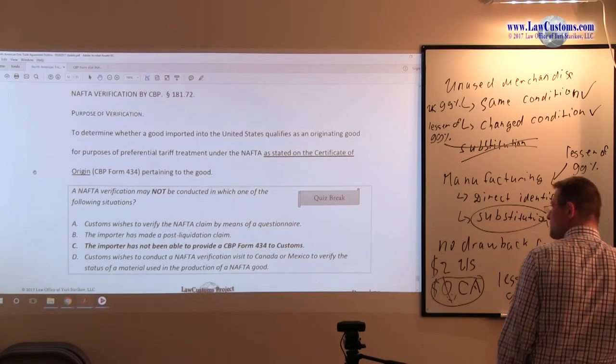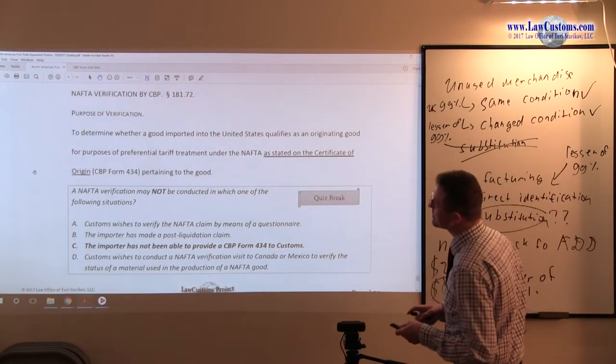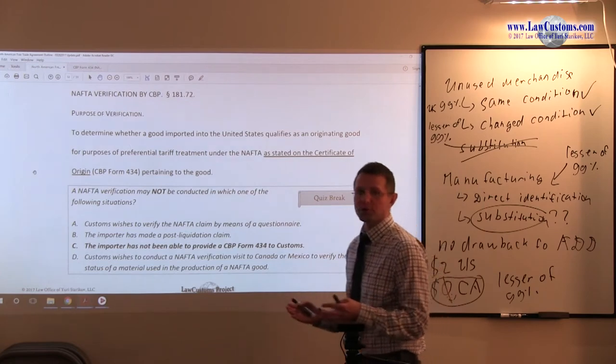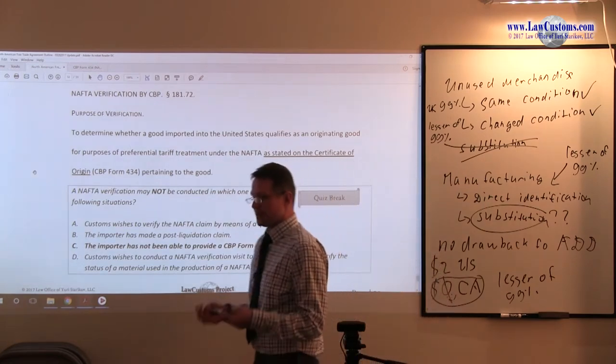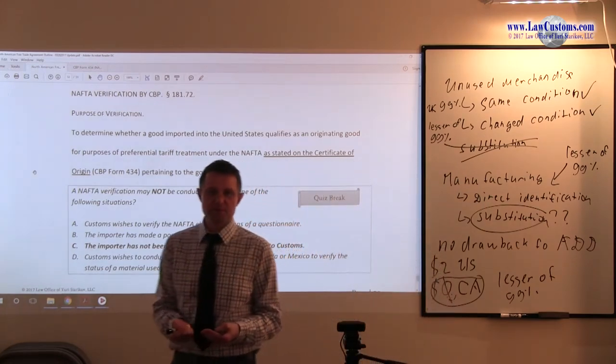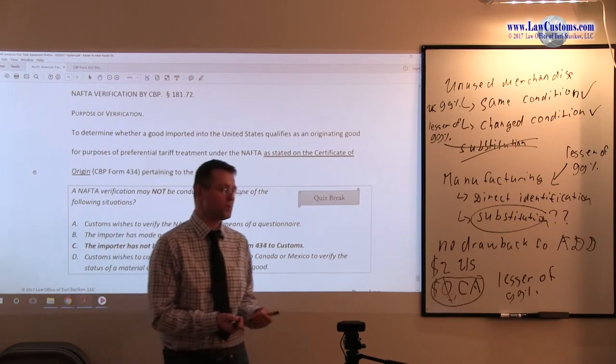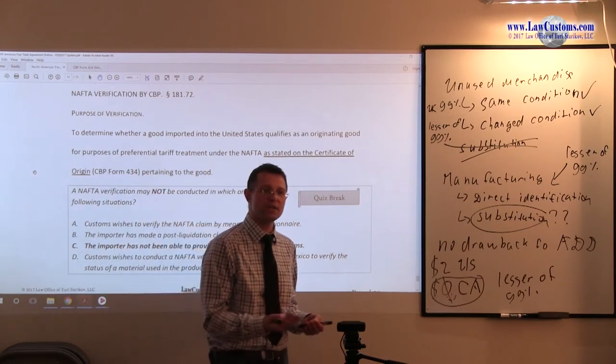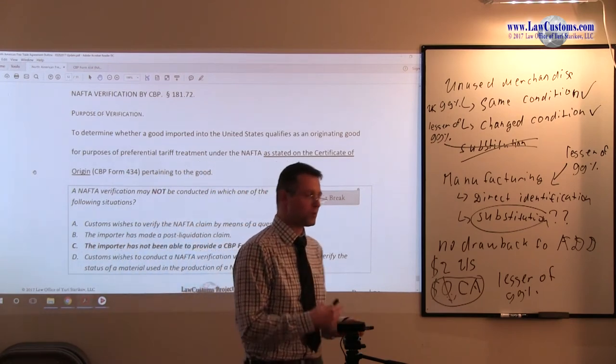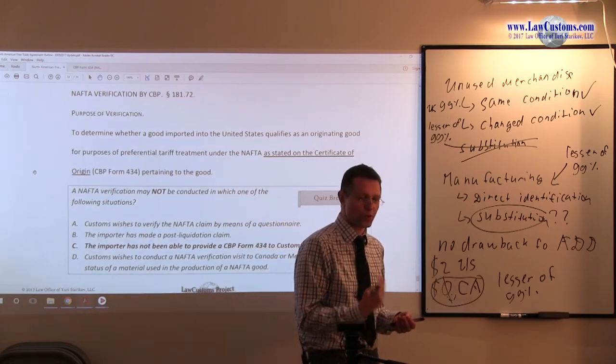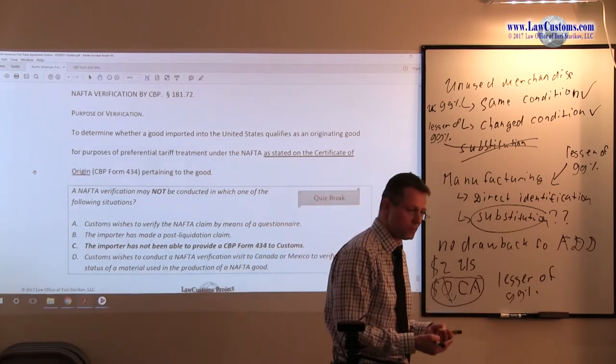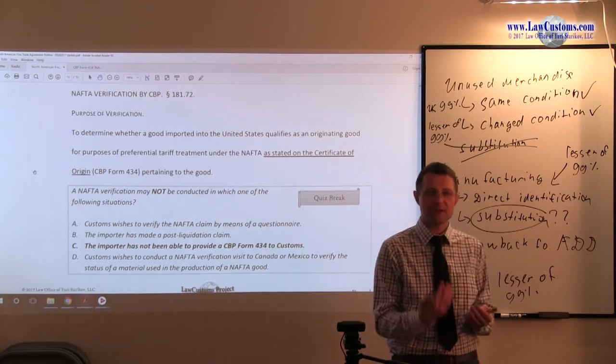Now we have a NAFTA verification. This is an audit program where customs says, okay, so you submitted the Certificate of Origin, CBP-1434, substantiate how you do your calculations, provide us documentation, provide us work records, provide us the electricity bills, provide us staff.